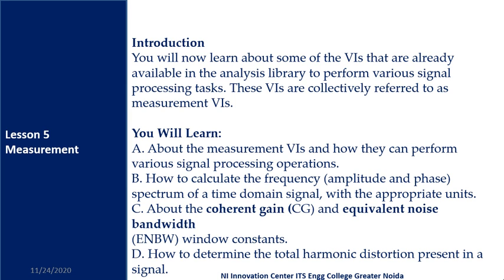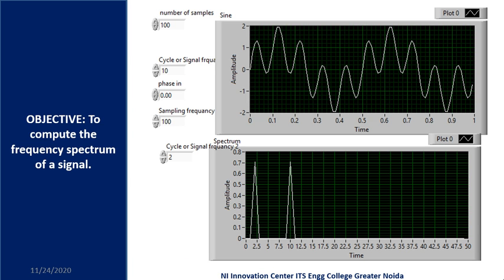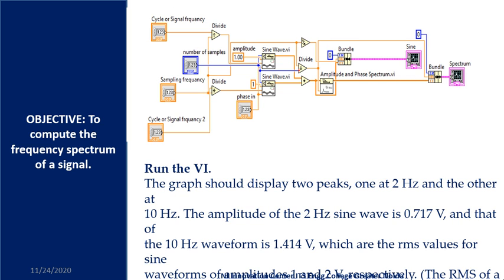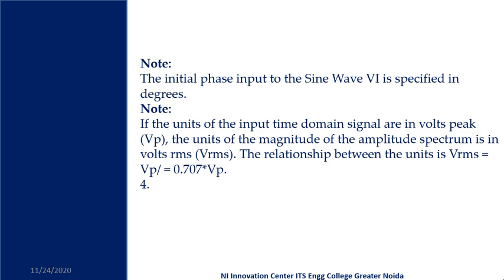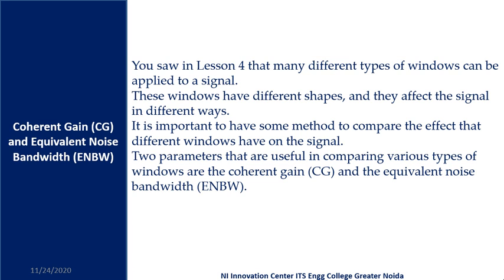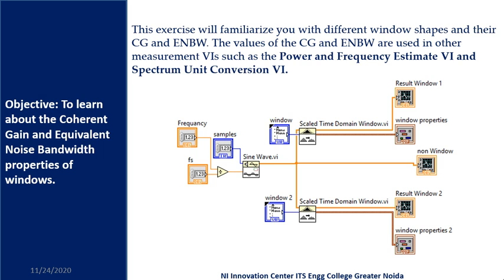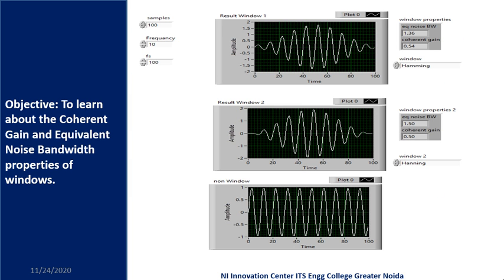Next, in lesson number five, we'll discuss measurement. In this measurement, we will learn how we can plot the frequency spectrum for multi-tone signals and non-windowed signals, and how we can read that multi-tone signal. I will teach you how to plot the multi-tone signal and many other things. We will also learn the current gain concept, noise and equivalent noise bandwidth, and try to plot the corresponding VIs and check the outputs.